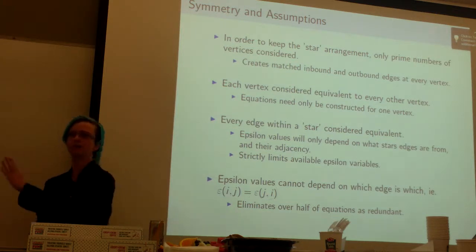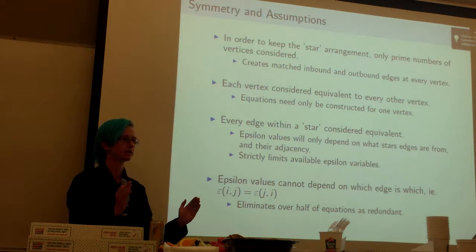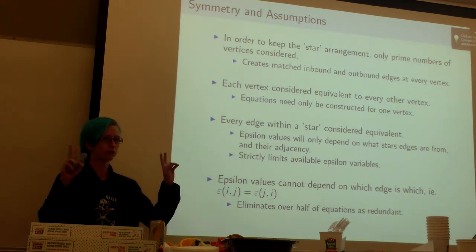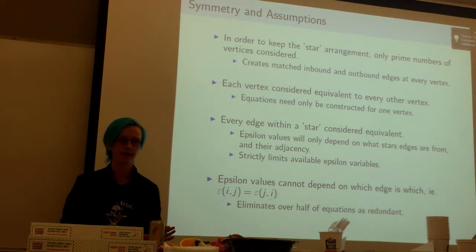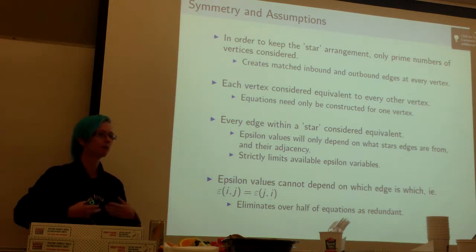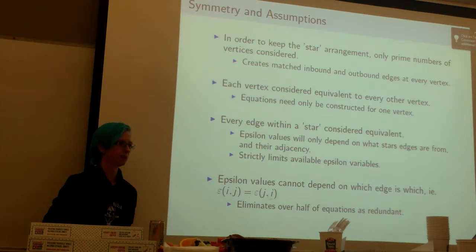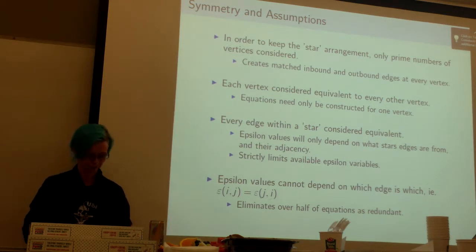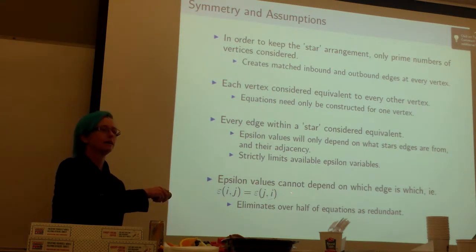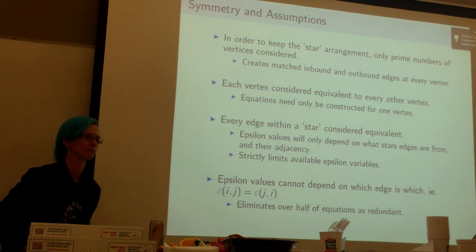Because this is a complete graph, all the vertices are connected to all the other vertices. I don't want to have to say this vertex is different. We're going to say all the vertices are equivalent. We only need a set of equations for one vertex, and you only need the epsilon values to depend on which stars the various edges are coming from. This makes it harder because the more epsilon values you have, the more variables you have, the more degrees of freedom, the easier it is to make it invariant. By limiting this way we're making it harder. And we also have that the values cannot depend on which edge is which. It's symmetric.